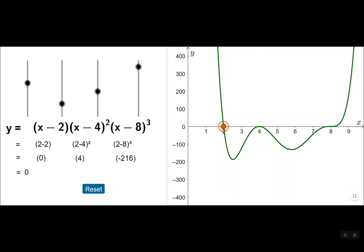What the factor theorem says is: if two is a root, as it is, you can see x minus two is a factor. If four is a root, as it is, then x minus four is a factor and it divides in evenly.